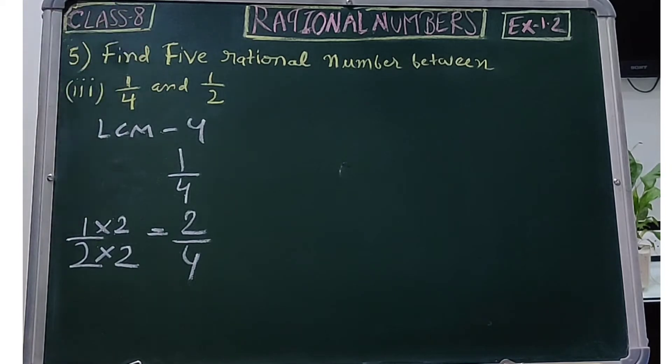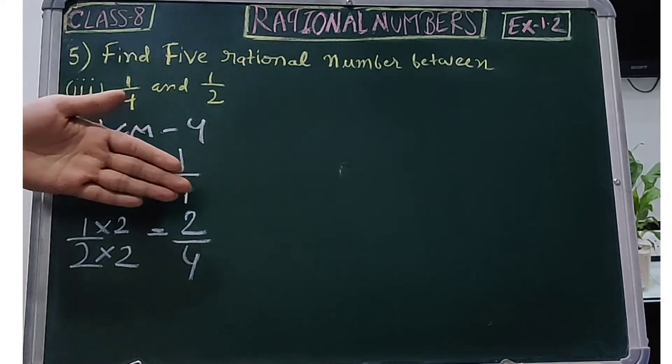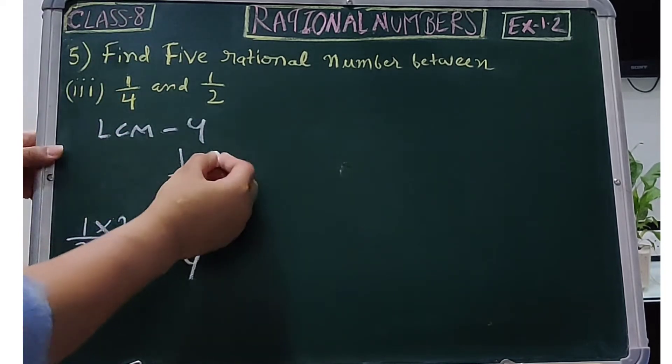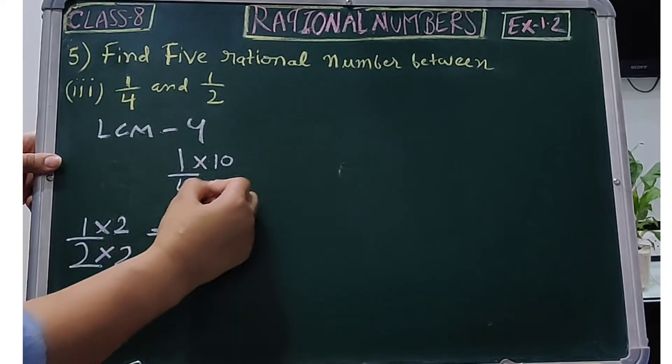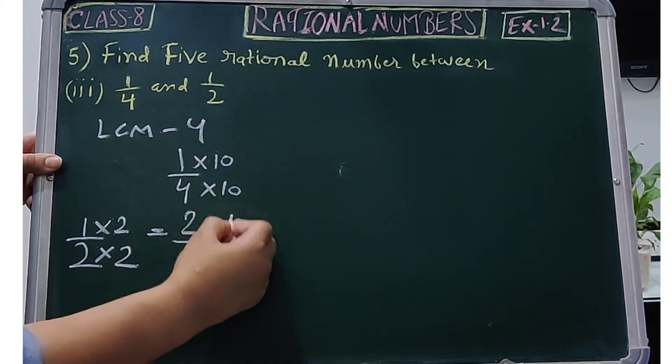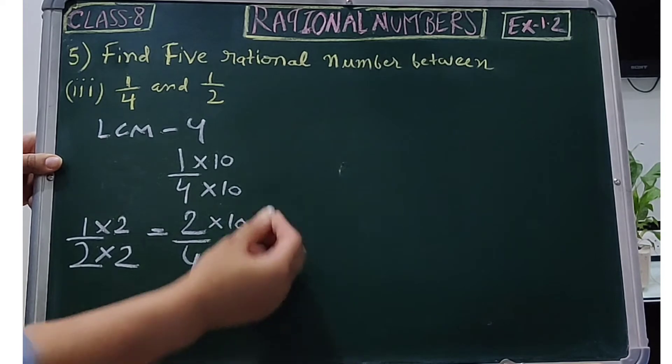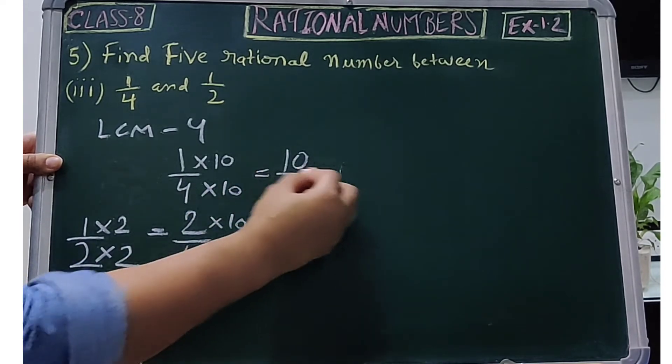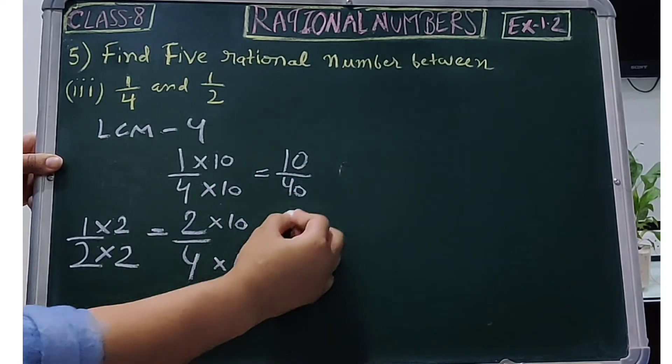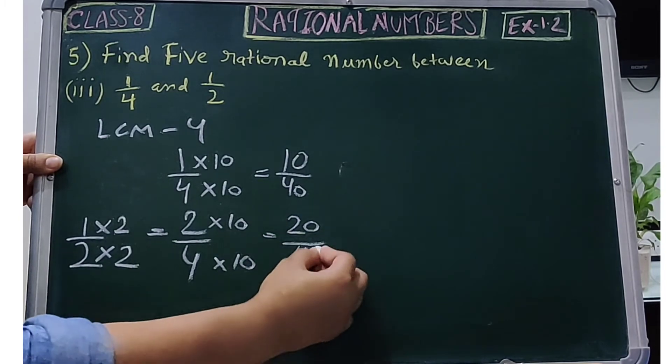We will find equivalent rational numbers. What is the easiest way? We multiply the numerator and denominator by 10. This gives us 10/40 and 20/40.